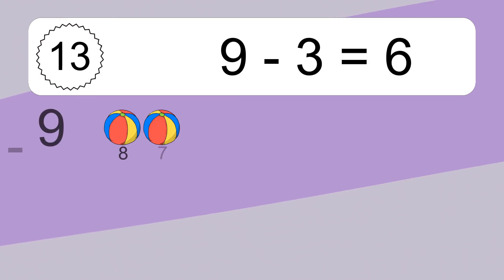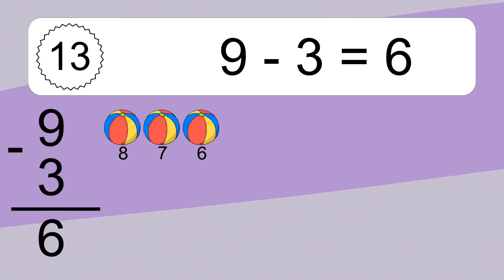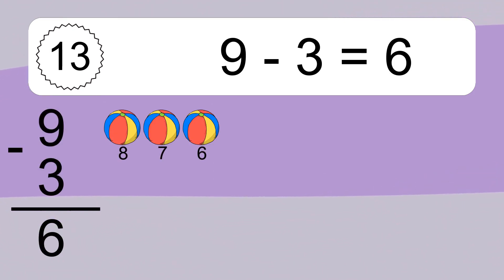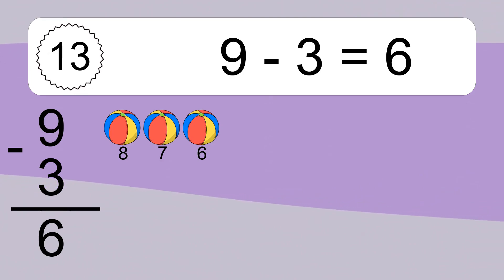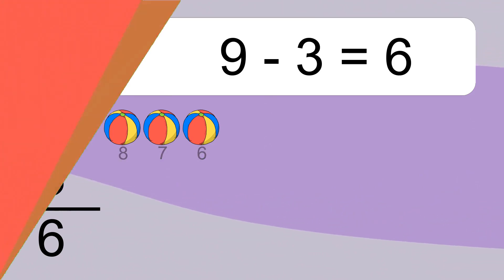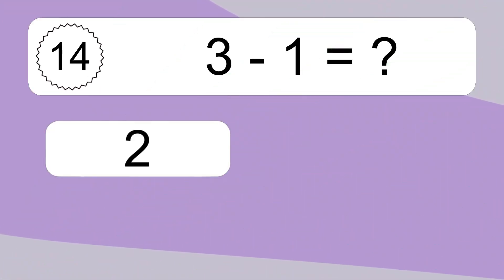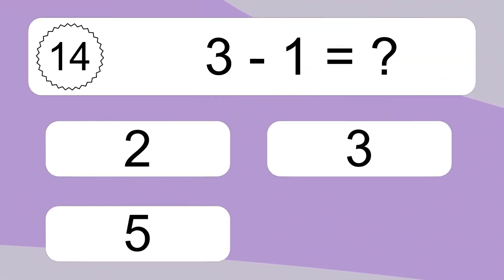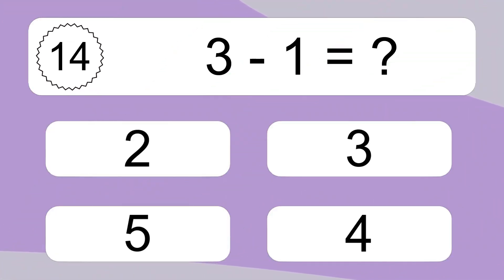9 minus 3 equals what? 9 minus 3 equals 6. Let's count it. 8, 7, 6.